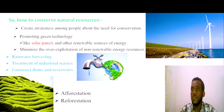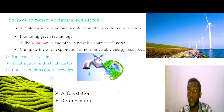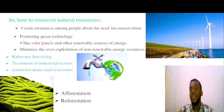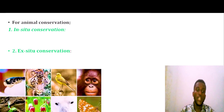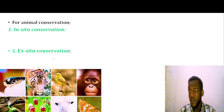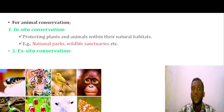Reforestation is another conservation method, which involves planting trees and growing plants. There are two types of conservation: in-situ conservation and ex-situ conservation. In-situ conservation means protecting or conserving plants and animals within their natural environment.